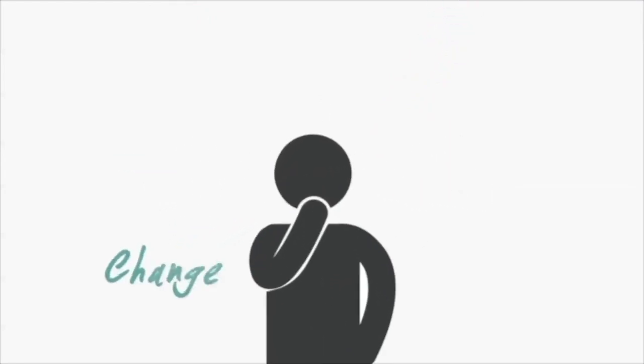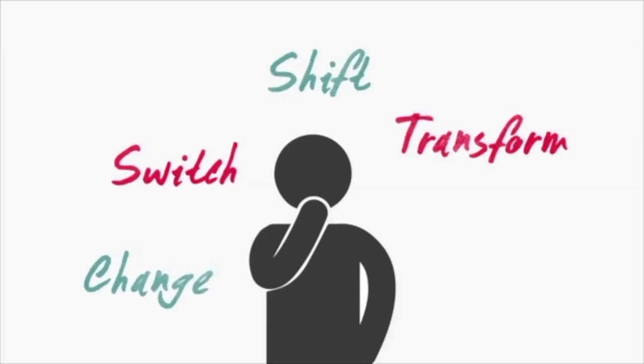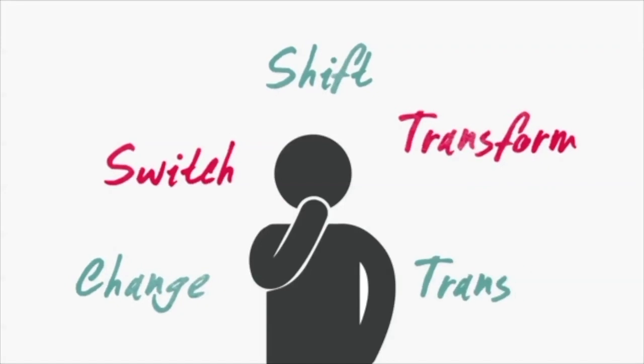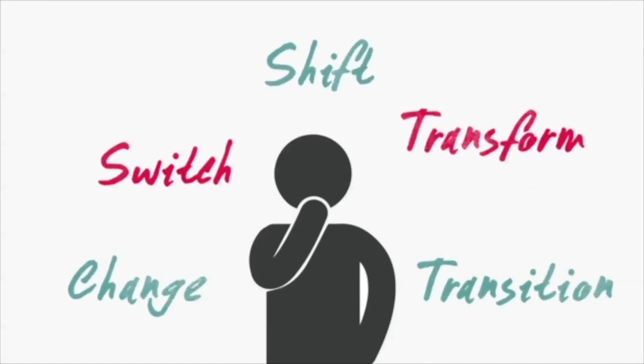Changes are also happening in your brain networks that process information about other people, which can make you more influenced by others, especially your friends. Together these changes can lead to riskier behavior.